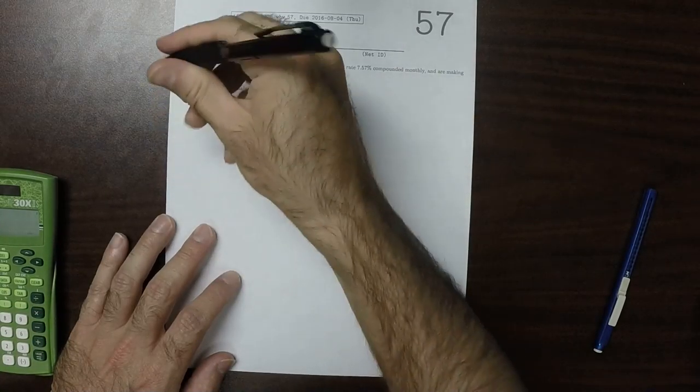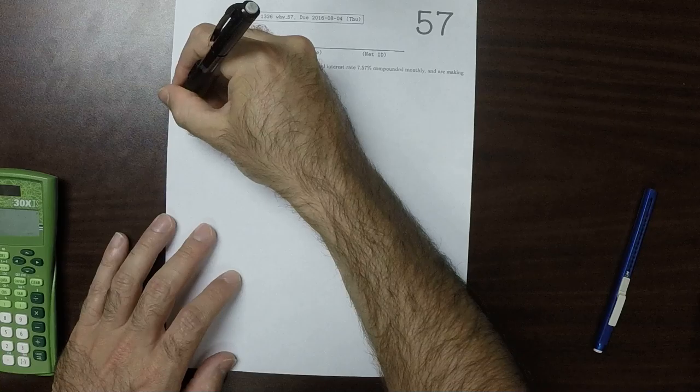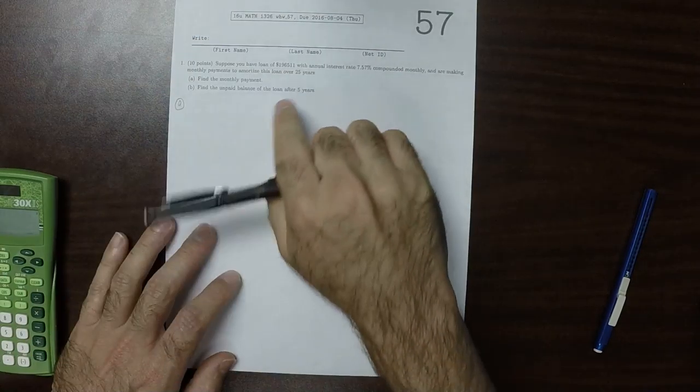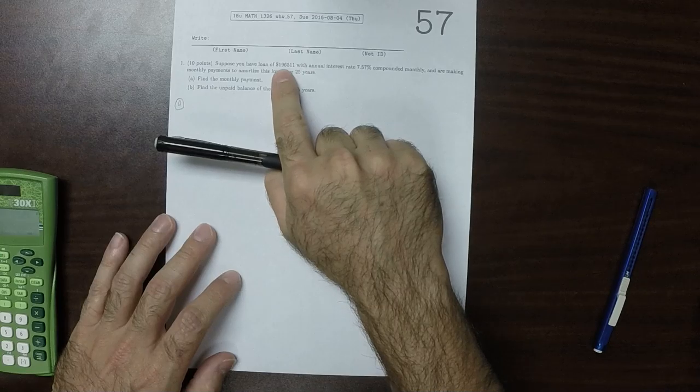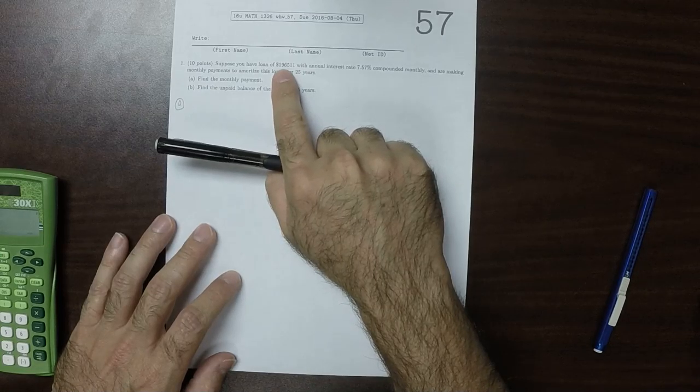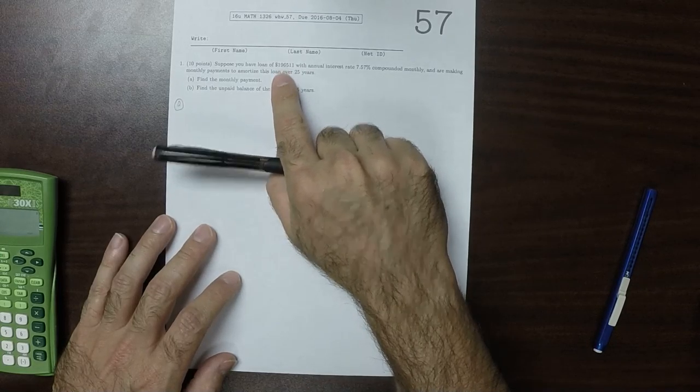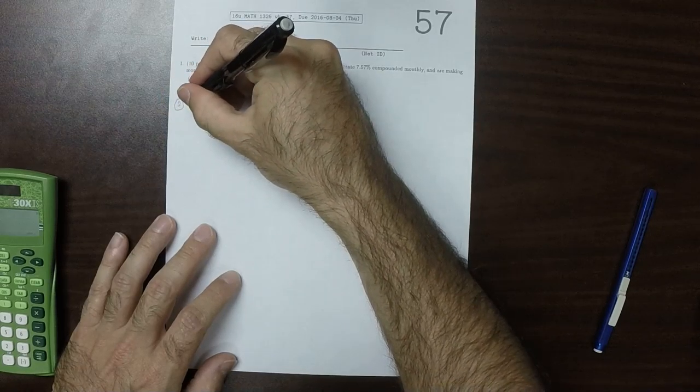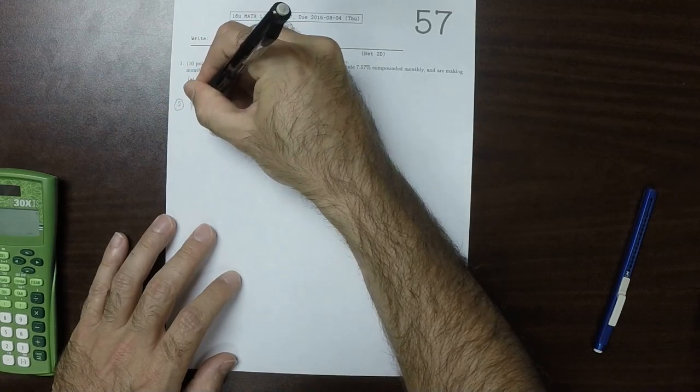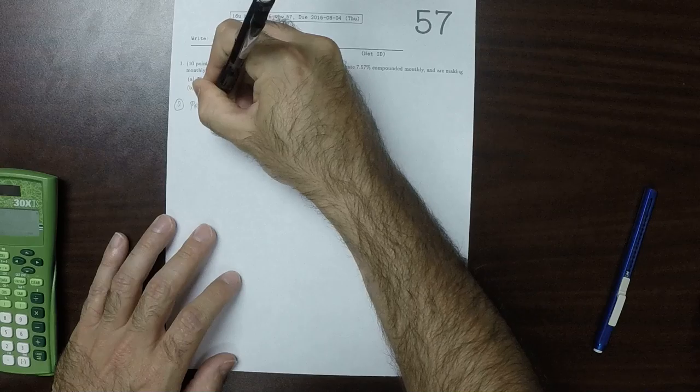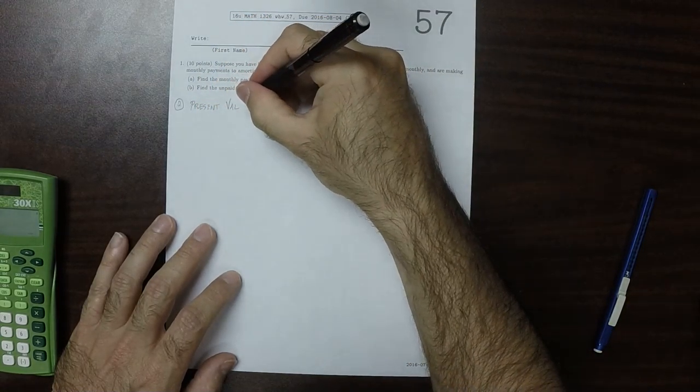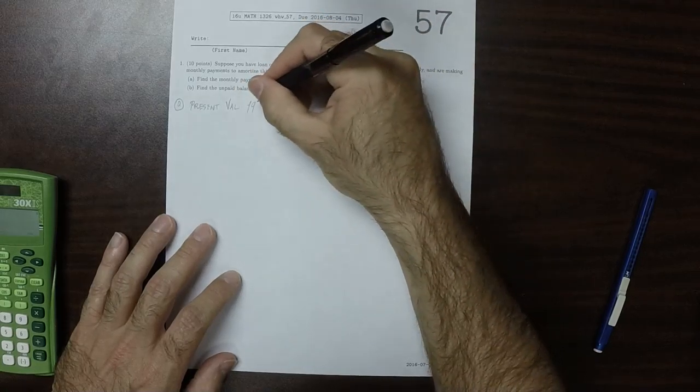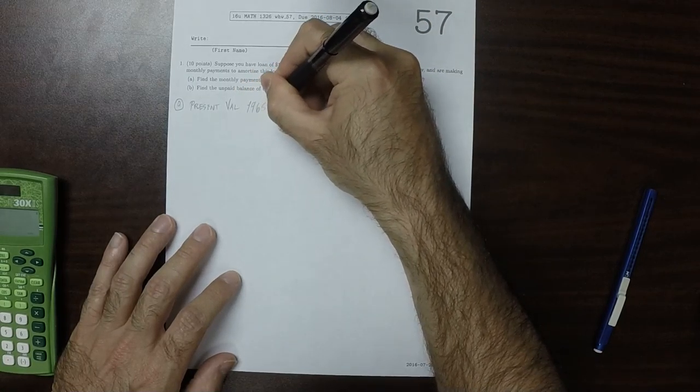At the beginning of time when this loan was incurred, it was a loan for $196,511. That means that what we know is the present value. The present value of the loan is $196,511.